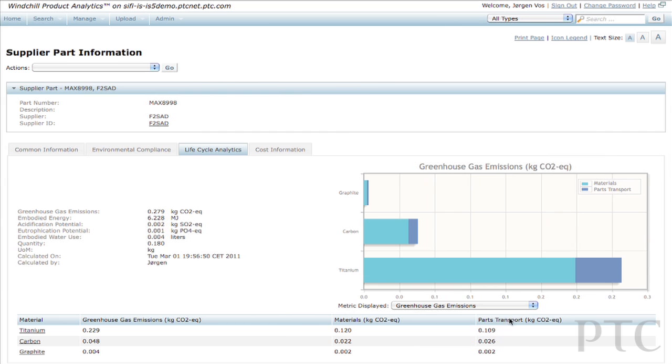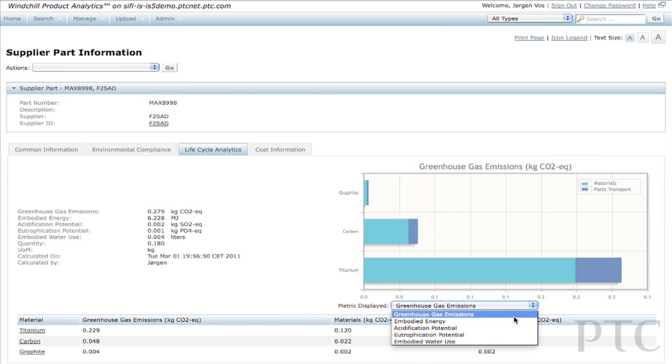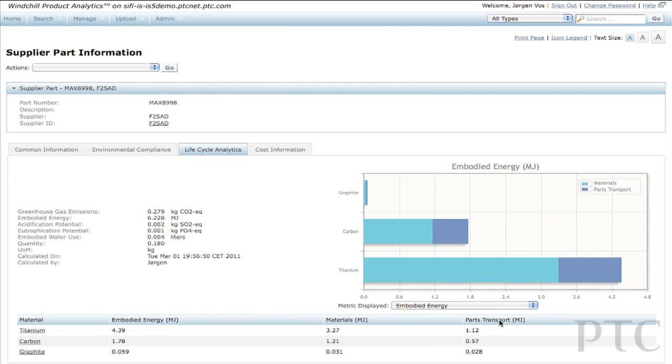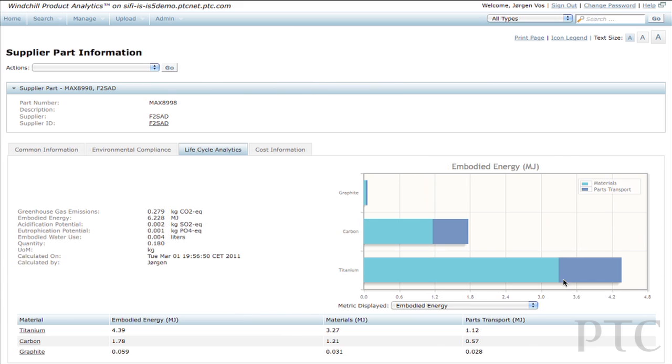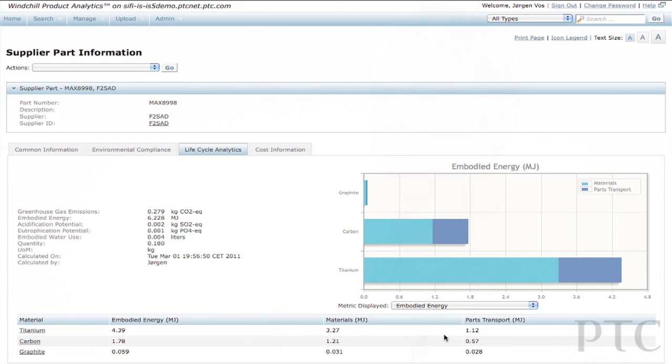Windchill LCA builds on the capabilities of Windchill product analytics to collect the material content of parts from suppliers and other sources. This information is combined with a database of environmental impact factors to build a product's lifecycle impact profile, including carbon footprint and embodied energy. The resulting analysis is made available throughout PTC's product development system, giving users access to the right information when they need it.